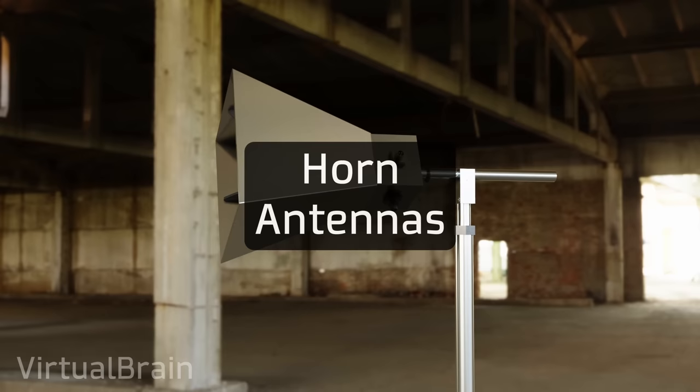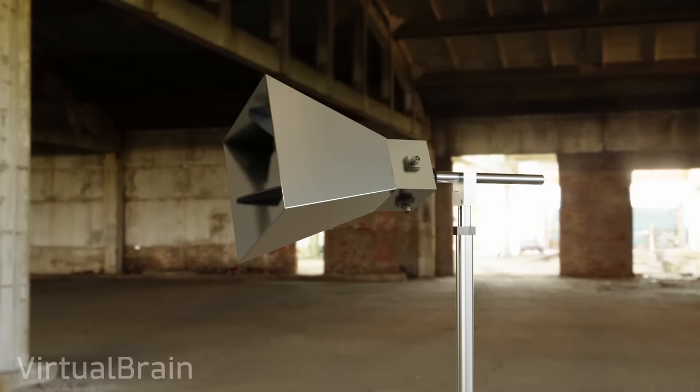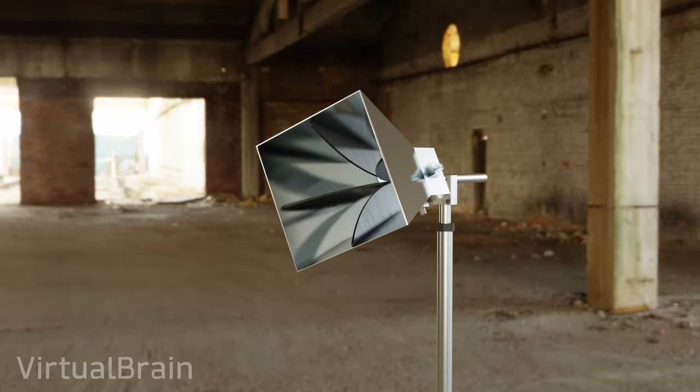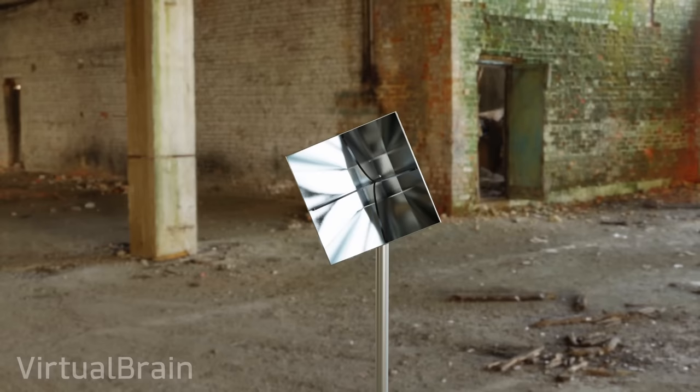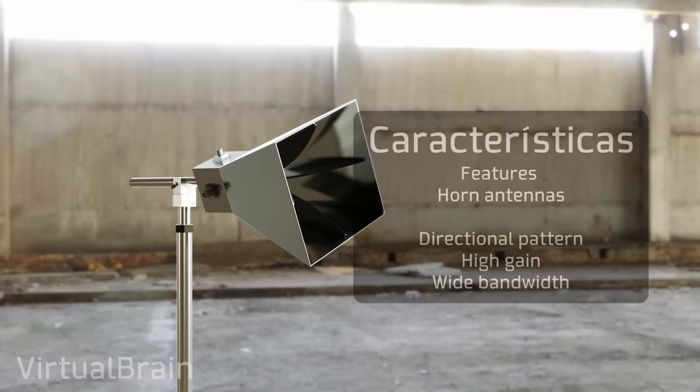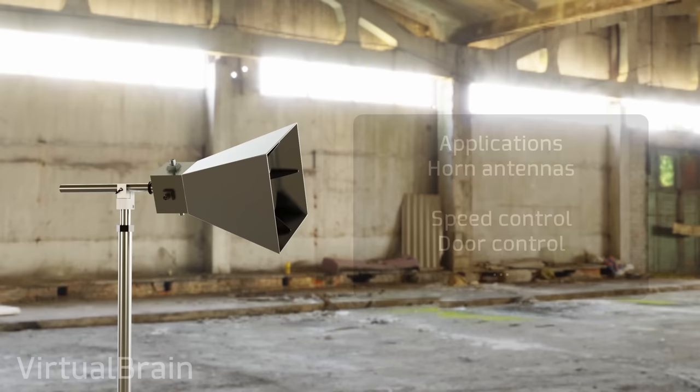Continuing with the directional antennas, we have horn antennas as well, which work similar to a megaphone. Inside it we will find a monopole or dipole antenna like the ones we saw before, but what makes them different is the integration of a waveguide which provides directivity to the radiation giving also a high gain to the antenna. In addition, horn antennas have the advantage of emitting radiation over a wide frequency range. In other words, they have a wide bandwidth. Because of this they are often used in applications such as radar for speed control, and door and gate operators.